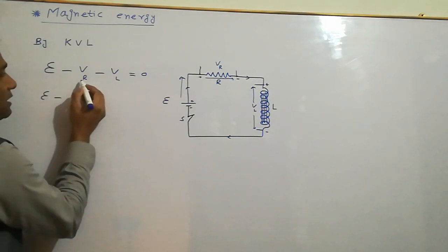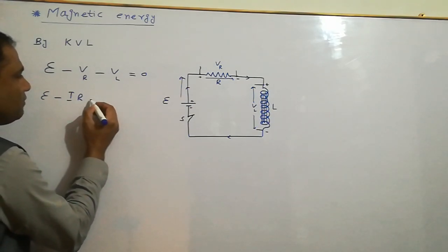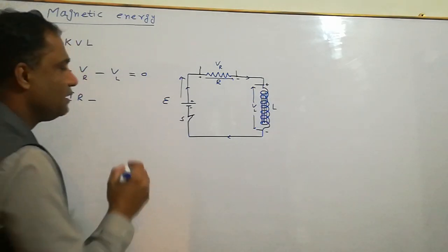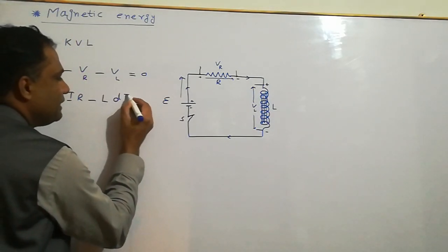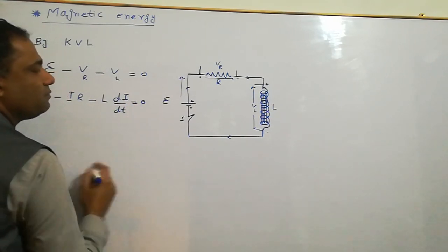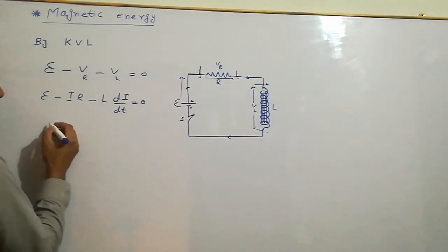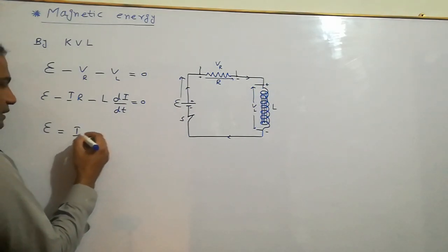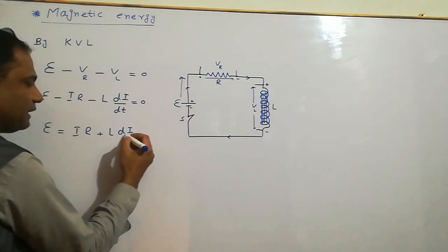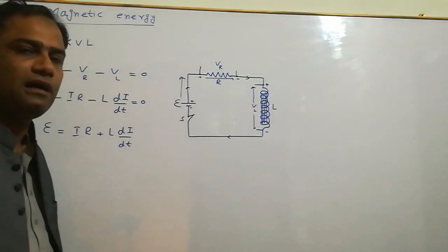This gives us E minus Vr minus Vl equals zero. Within the first chapter, this leads to E is equal to IR plus L dI/dt. Multiplying both sides by I, we get the power equation.